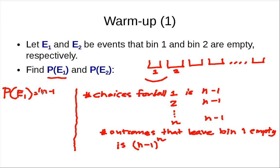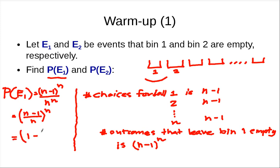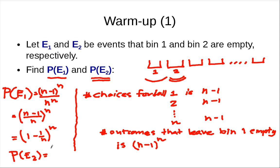So P(E1) equals (n minus 1)^n over n^n, which we can write as (n minus 1)/n to the n, or equivalently (1 minus 1/n) to the n. The same argument works if we replace bin 1 with bin 2, so P(E2) is also equal to (1 minus 1/n) to the n.